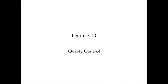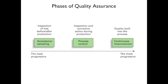Lecture 10: Quality Control. Here are the phases of quality assurance. On the left you have acceptance sampling — inspections of lots before and/or after production. This is the least progressive form of quality assurance. In the middle is inspection and corrective action during production, called process control. On the right is quality built into the process, or continuous improvement, which is the most progressive. The previous lecture covered continuous improvement; this lecture covers the first two, starting with process control and ending with acceptance sampling.